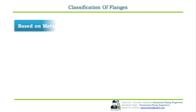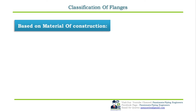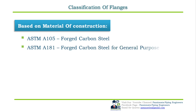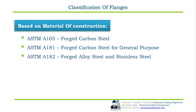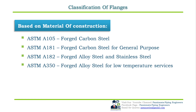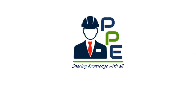Based on material of construction: flanges are normally forged, except in very few cases where they are fabricated from plates, in which case they should possess weldable quality. Common materials of construction are: ASTM A105 for forged carbon steel, ASTM A181 for forged carbon steel for general purpose, ASTM A182 for forged alloy steel and stainless steel, and ASTM A350 for forged alloy steel for low temperature services.